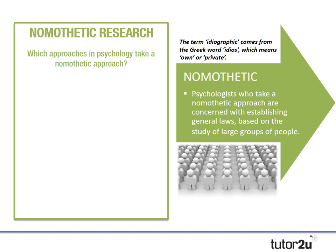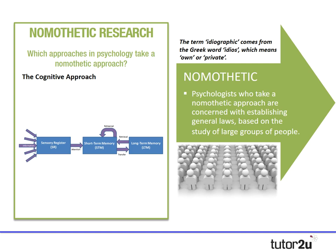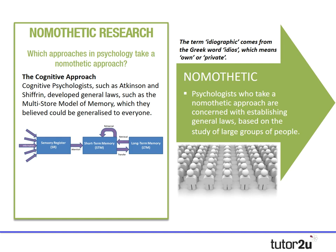If we think about the behavioural approach, behaviourists like Pavlov and Skinner used experiments on animals to establish laws like classical and operant conditioning, which they then generalised to non-human participants and to humans. They're applying laws found in animals to humans, which is particularly interesting. And thinking about a third example, cognitive psychologists like Atkinson and Shiffrin developed the multi-store model because they believe it can be applied to everyone. So we can see how the behaviourists, biologists, and cognitive psychologists all typically take a nomothetic approach.